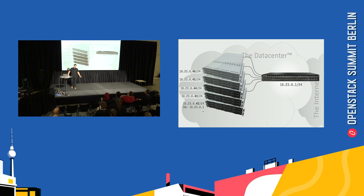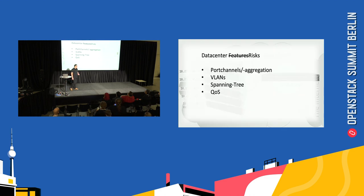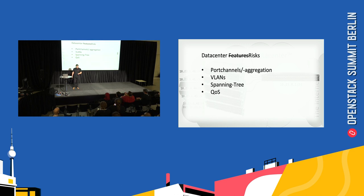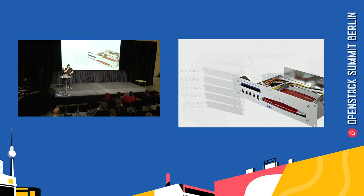Your expensive switch in the data center also has some things I call risks — others call them features. You use port channels and aggregations for redundancy, VLANs to separate traffic, and SpanningTree. Anyone had an outage because SpanningTree reconverged in the middle of the night? That's why I call them risks. And if you take away these risks, it seems like you're making your expensive switch just a dumb CPE device.